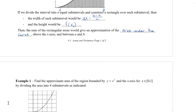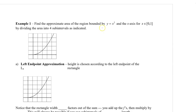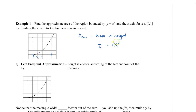Let's take a look at an example. Find the approximate area of the region bounded by y = x² and the x-axis, between 0 and 1, divided into four subintervals. We'll do a left endpoint, a right endpoint, and a midpoint approximation. The area of a rectangle is base times height. Going from 0 to 1 with four subintervals, the base of each rectangle is 1/4, and the height is f(xi) = xi².